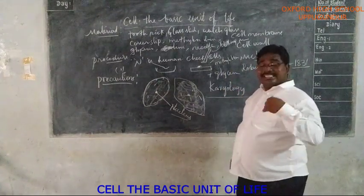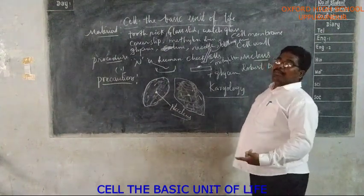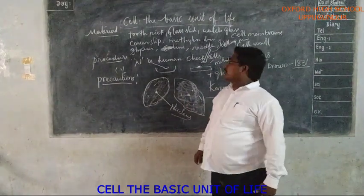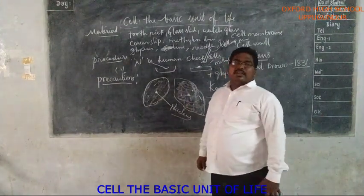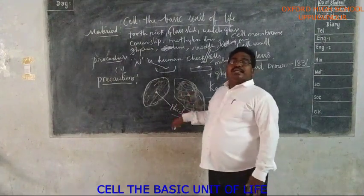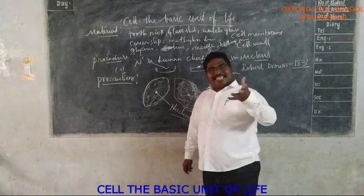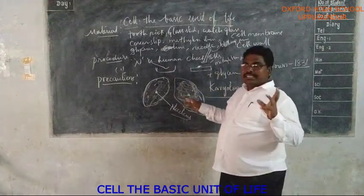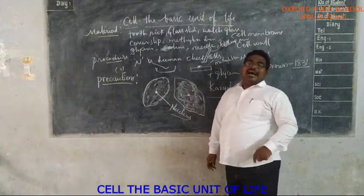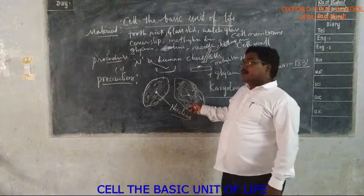Much more was learned about the nucleus after Robert Brown. The nucleus is also called the cell's control room — it is the largest and most distinct part among all the cell organelles.